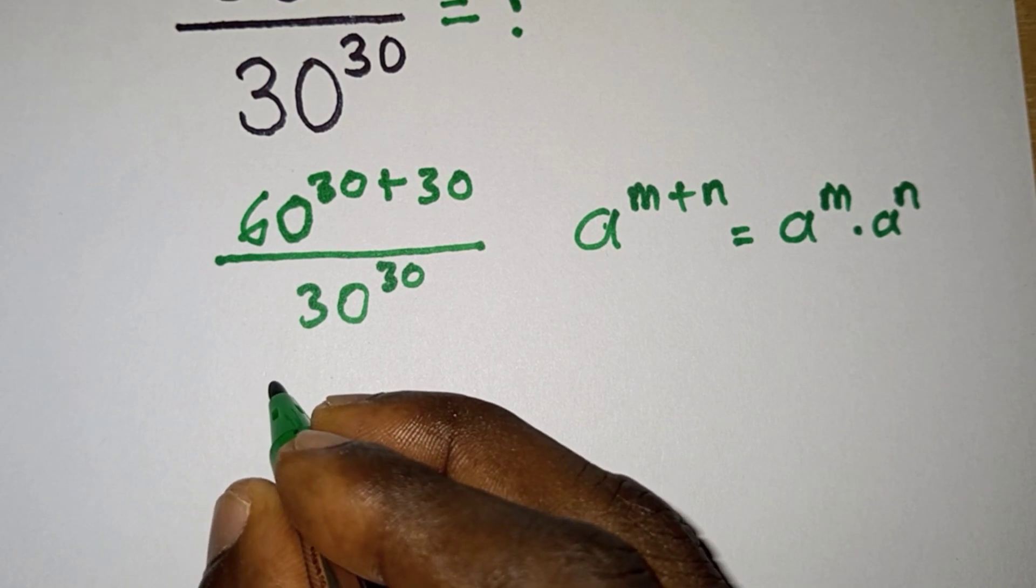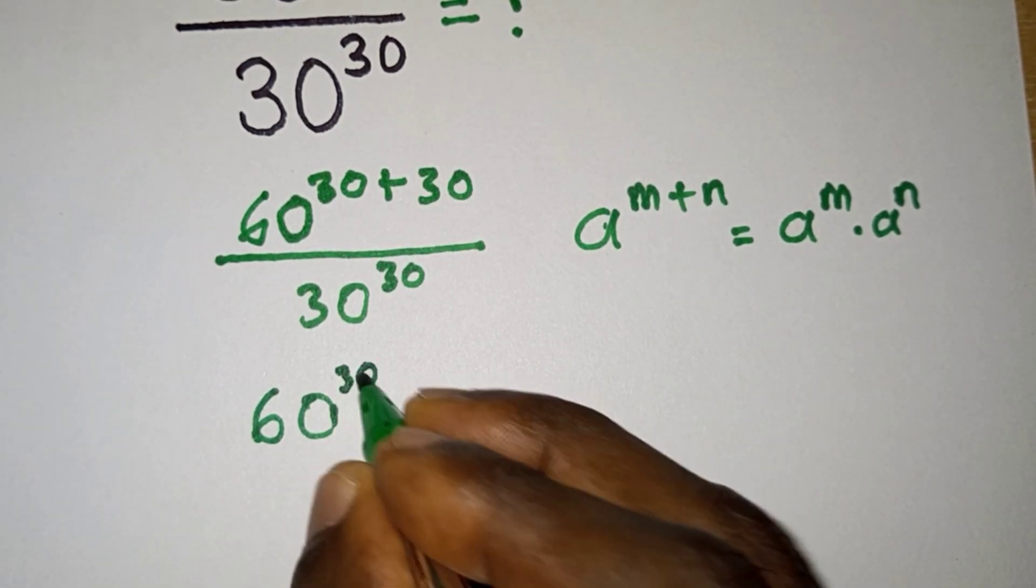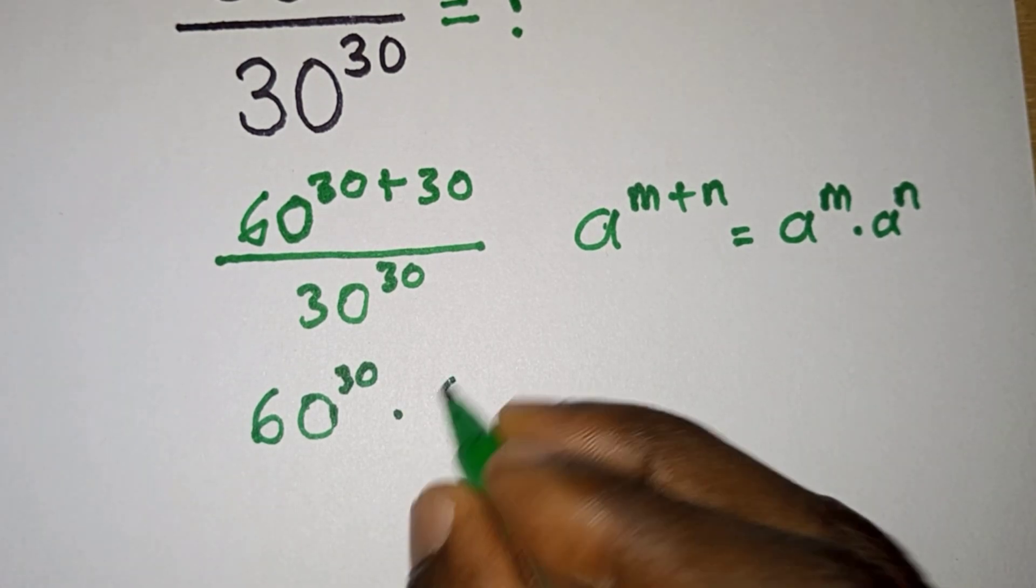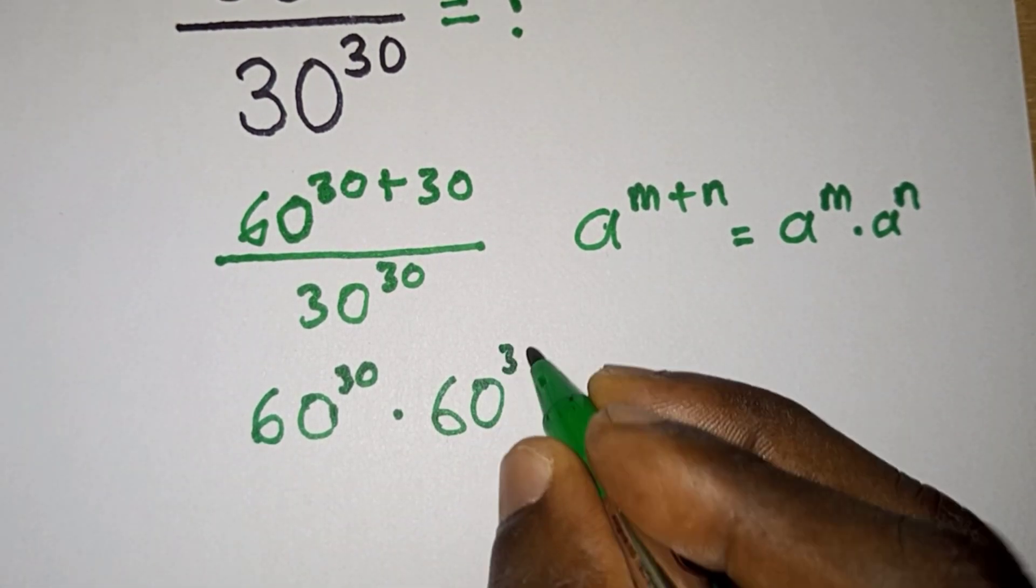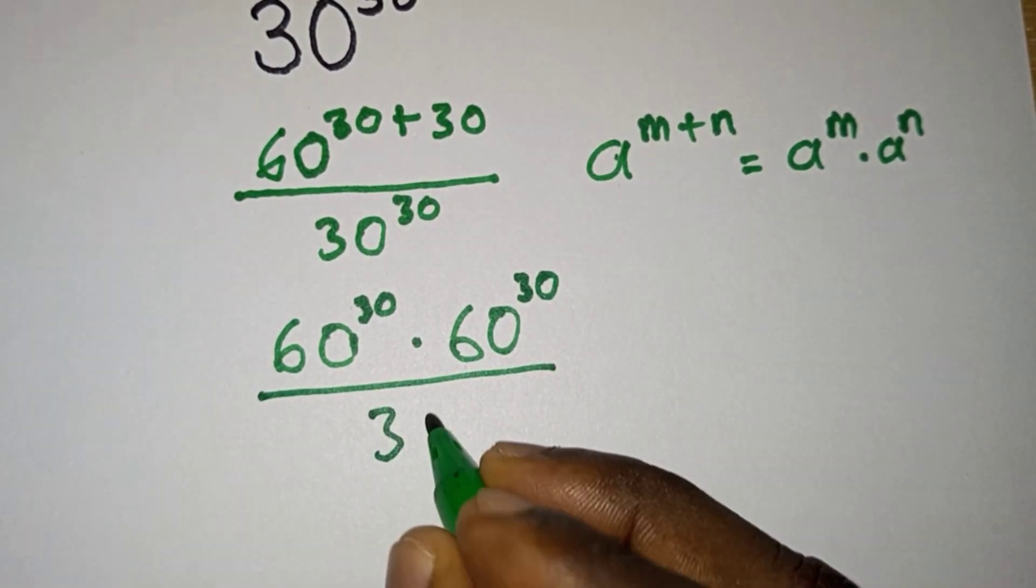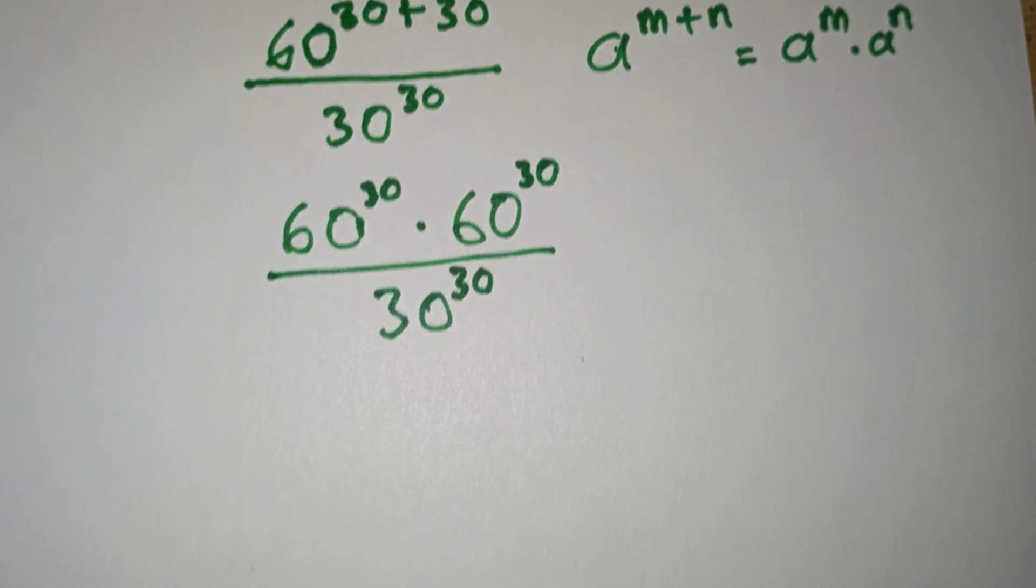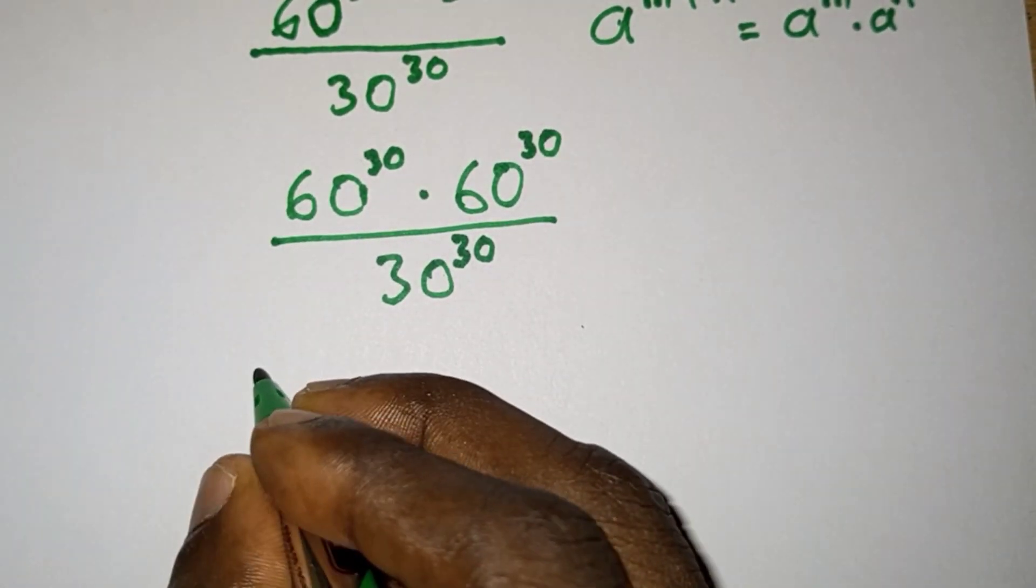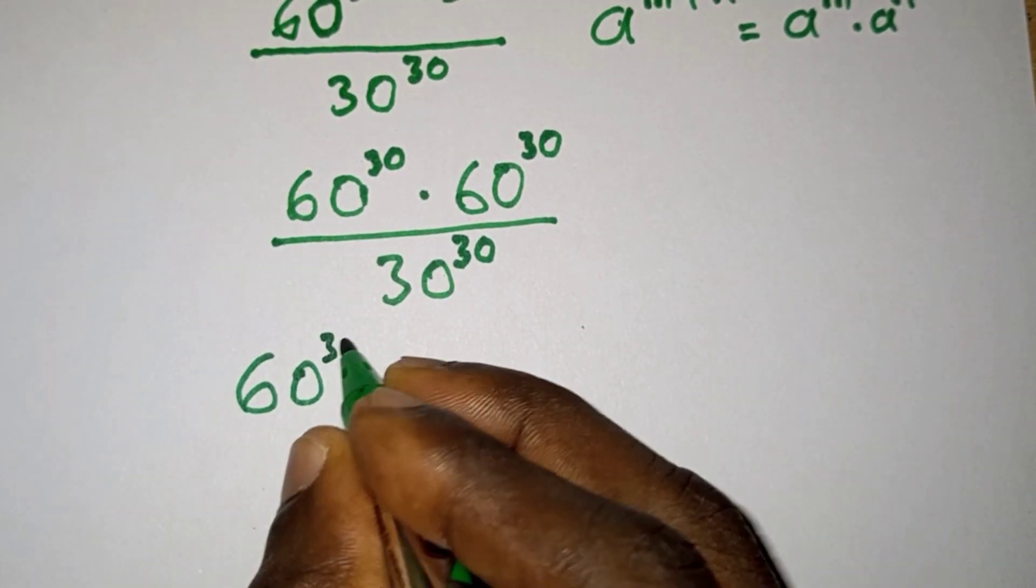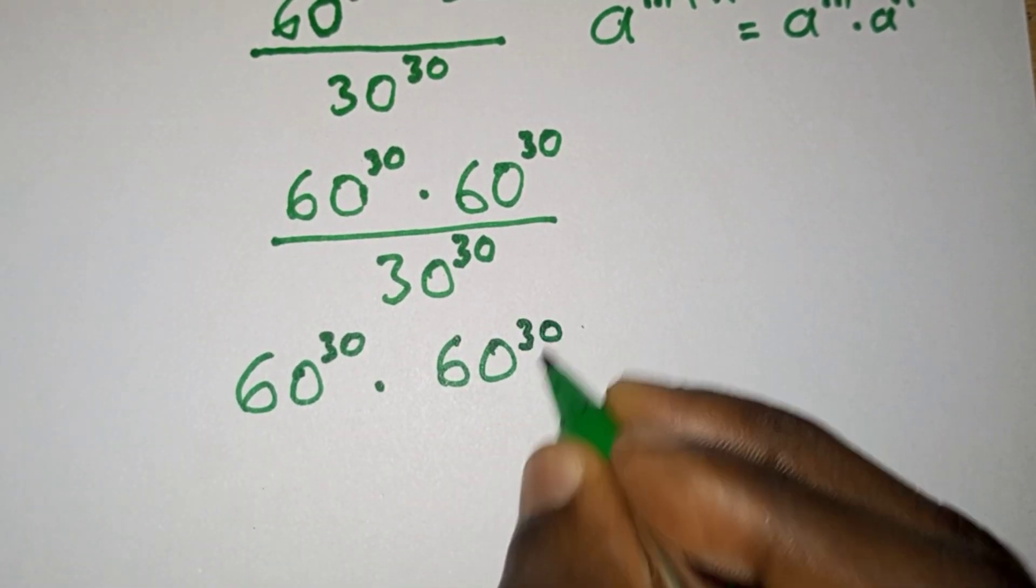Now let's go ahead and split this. We can write it as 60 to the power 30 times 60 to the power 30 divided by 30 to the power 30.